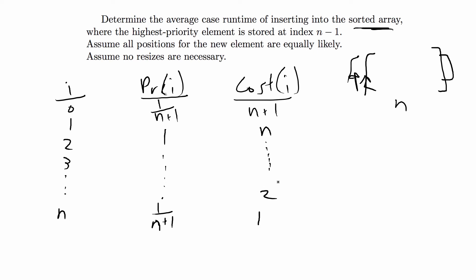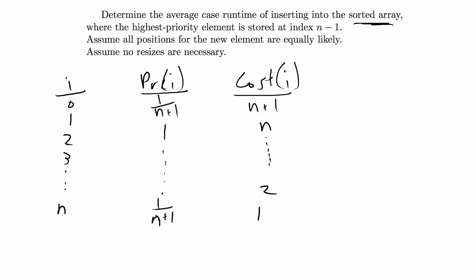This basically decreases until you get 2 and then 1 for adding to the end of the array. That's kind of the pattern of what the cost would be for adding to a sorted array when the order is ascending. We have a little table, and from there we can do the average case analysis of it.